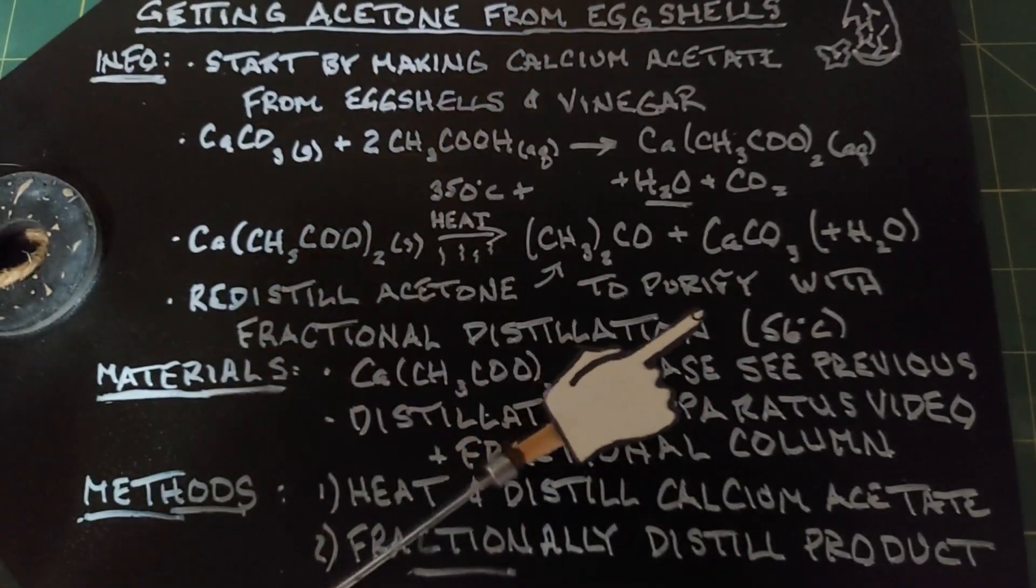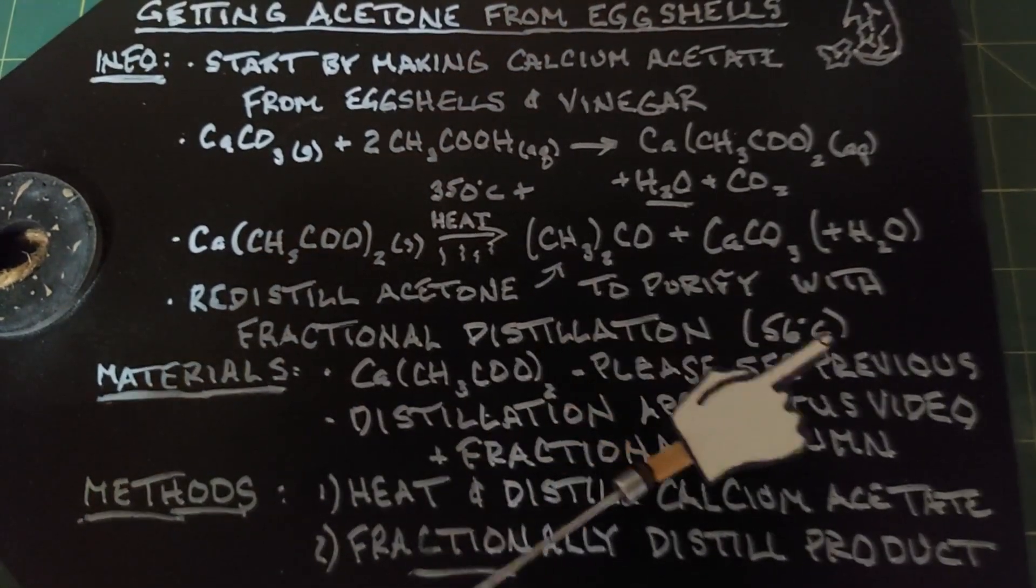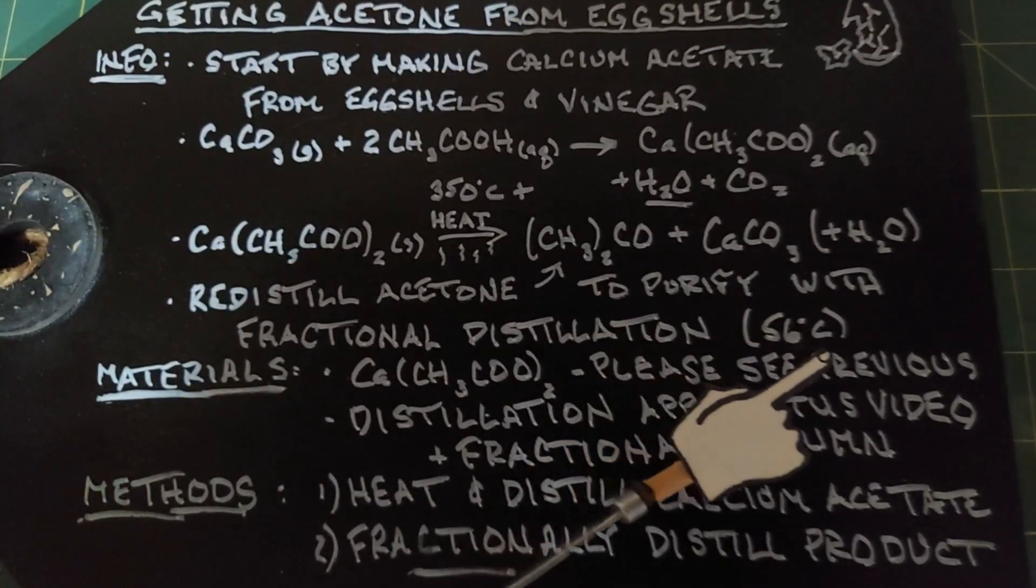When we do this, the acetone will come over around 53 to 58 degrees Celsius. I put 56 here because it was in the middle.